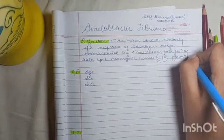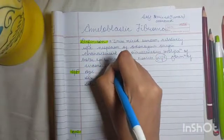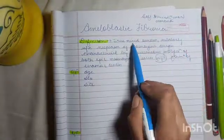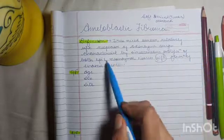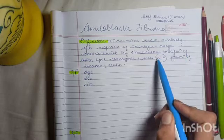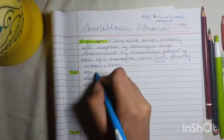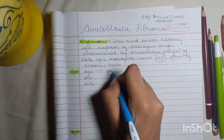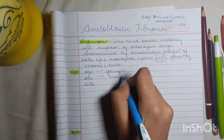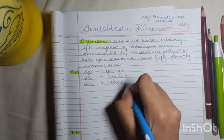From the definition, we know it is a mixed tumor with both epithelium and mesenchymal tissue, with proliferation occurring without formation of enamel and dentine. Regarding age, it is seen in younger age groups. In sex, it is more predominant in males. The site is the molar area of the mandible.